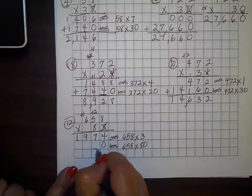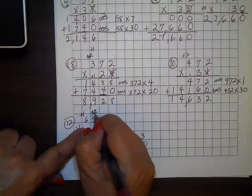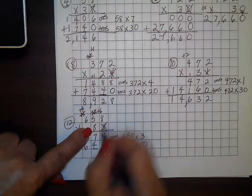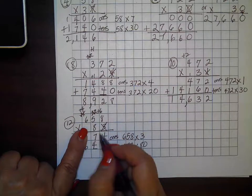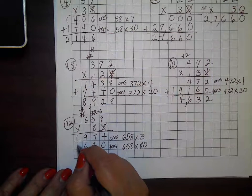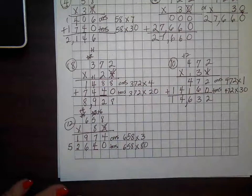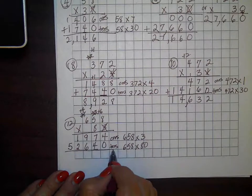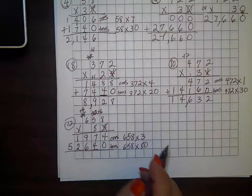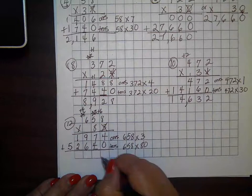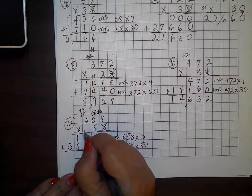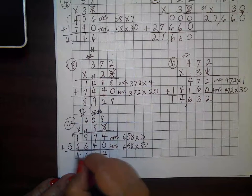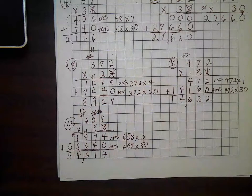Moving over to the tens: 8 times 8 equals 64, regroup; 8 times 5 is 40, plus 6 equals 46, regroup; 8 times 6 equals 48, plus 4 is 52. Remember my estimation is around 56,000 — I have 52 in the ten-thousands. Now adding up: 4 plus 0 equals 4; 7 plus 4 equals 11, regroup; 9 plus 1 is 10, plus 6 equals 16; carry — 2, 3, 4; bring down the 5 — so it's 54,614.